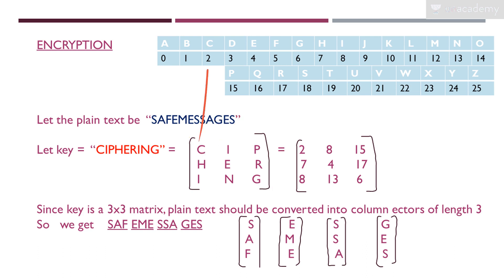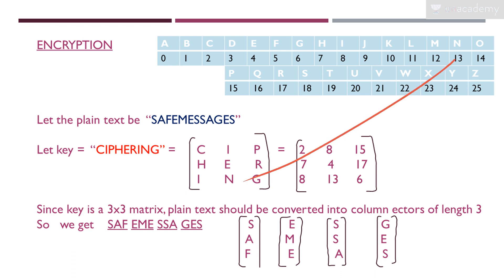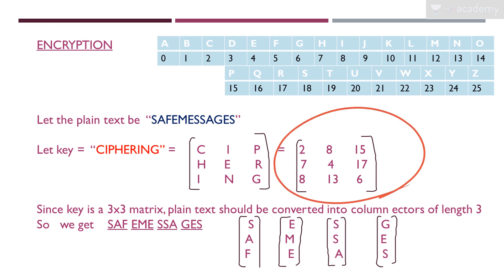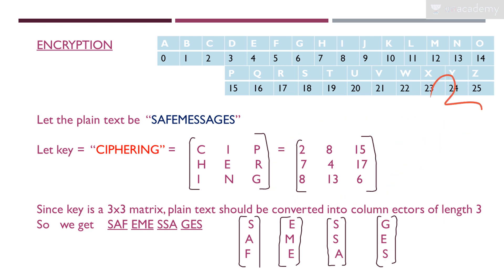We convert the key letters to their corresponding integer values: C=2, I=8, P=15, H=7, E=4, R=17, I=8, N=13, G=6. This gives us the three by three integer key matrix. Since the key is a three by three matrix, the plain text must be converted into column vectors of length three.